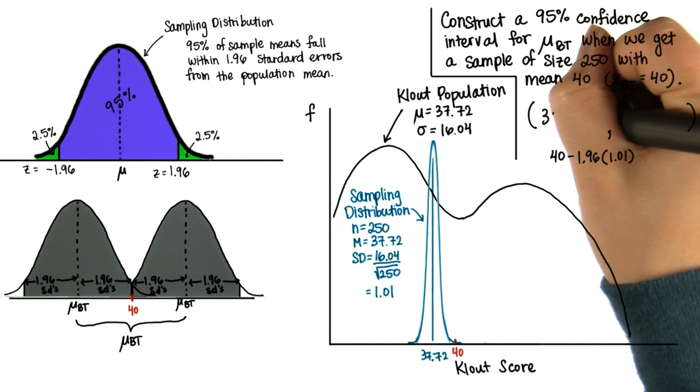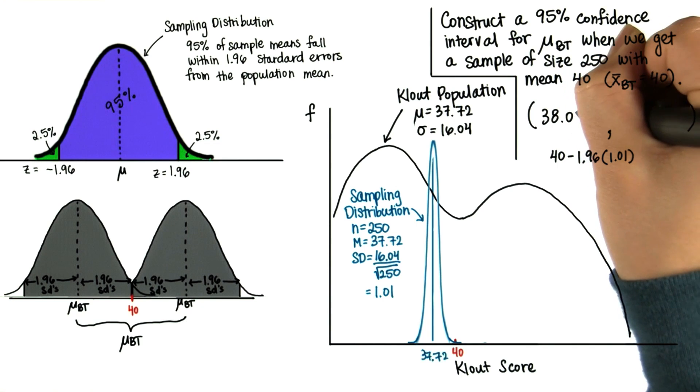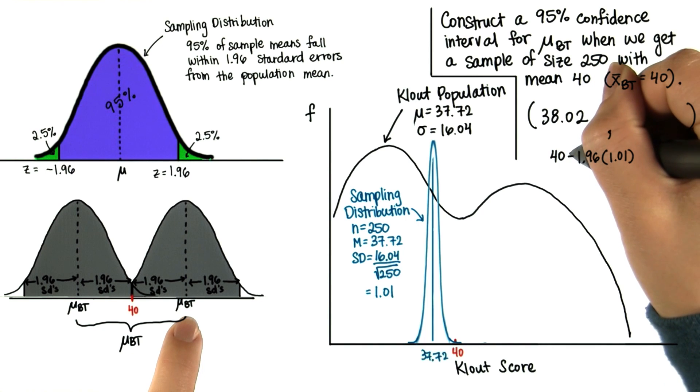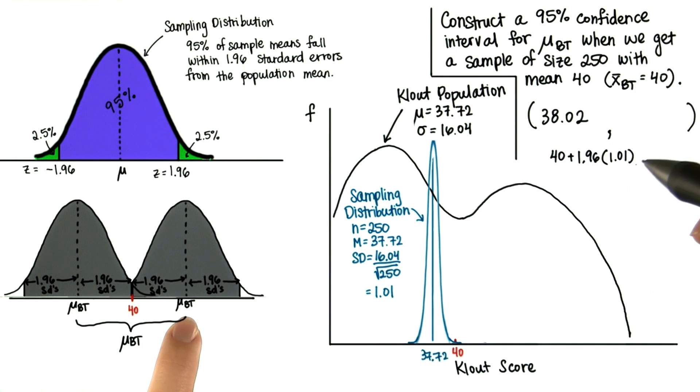So this is 38.02 approximately. And then to find the upper bound of this confidence interval, we just add 1.96 standard deviations from the mean. So this is about 41.98.